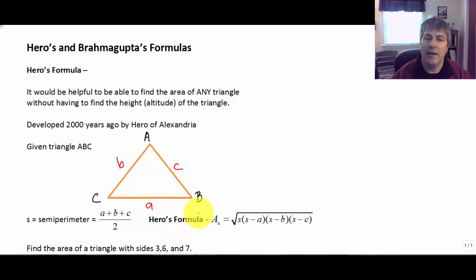We can calculate the area by taking the square root of the semi-perimeter times the semi-perimeter minus side A times the semi-perimeter minus side B times the semi-perimeter minus side C. So the square root of all of that.